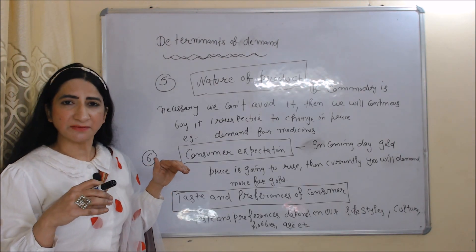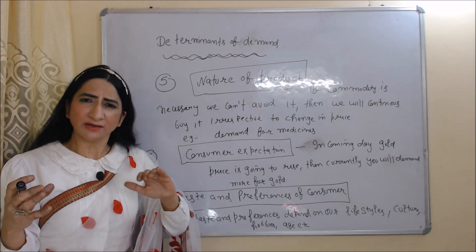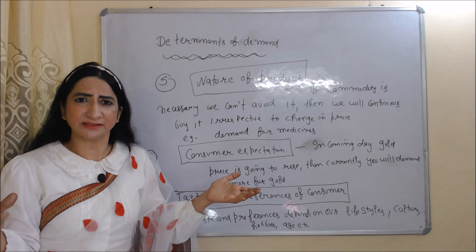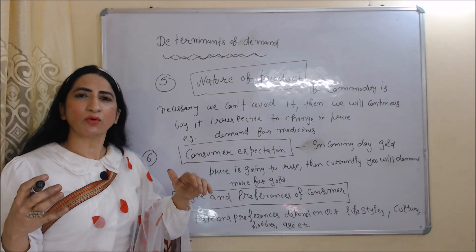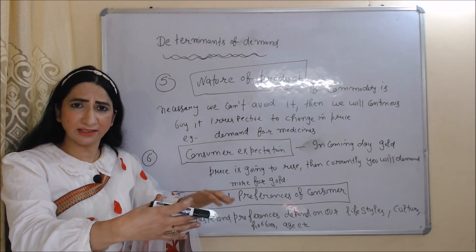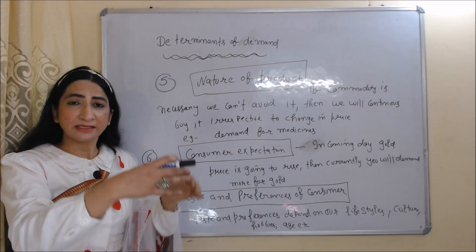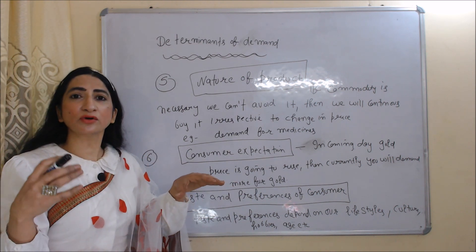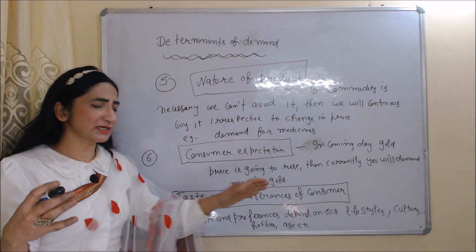Next factor which affects our demand is nature of product. If a commodity is necessary in nature, we can't avoid it, so we continue to buy it irrespective of change in price. For example, demand for medicine — we will buy medicine no matter what the price is. Next is consumer expectation. If we expect that in the future a product's price is going to rise, currently we will buy more. For example, if you expect gold price is going to rise, then currently you will demand more gold. Last is taste and preferences — our demand is also influenced by our taste and preferences, which depend on our lifestyle, culture, hobbies and age.